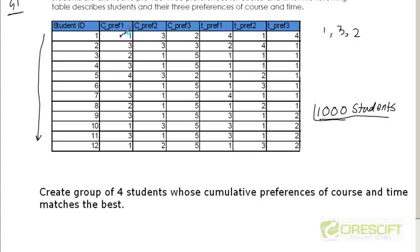For example, I can just see this table here and then I figure out that, okay, look like 1, 6, 10, and 12, all of them wanted to learn course ID 1. That means if I form a group with 1, 6, 10, 12, then this group must learn course ID 1, which is Oracle.